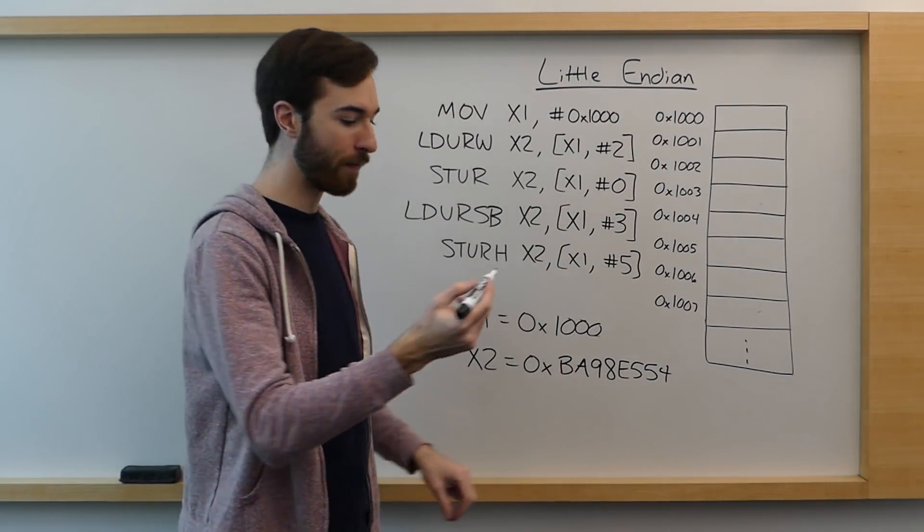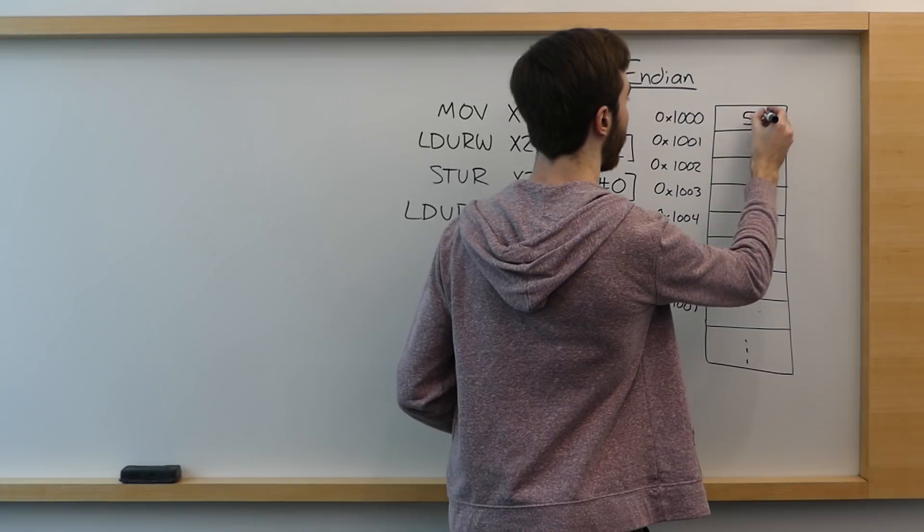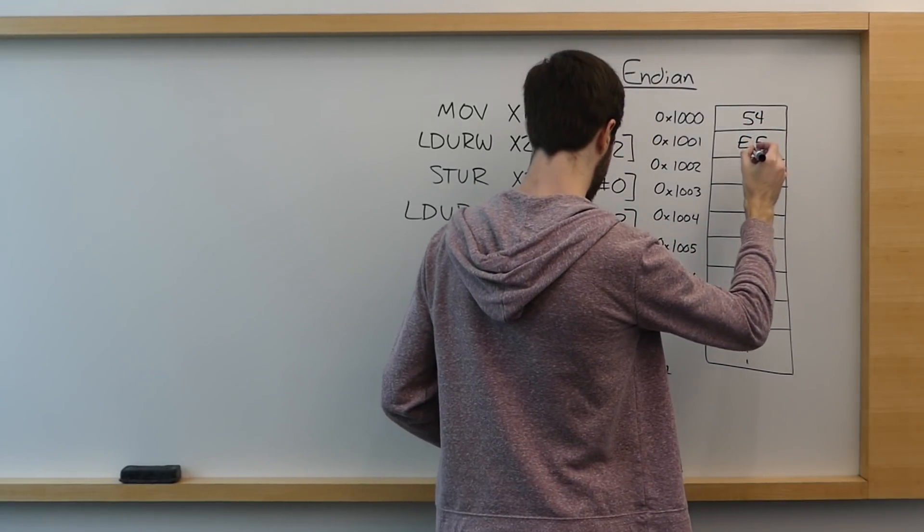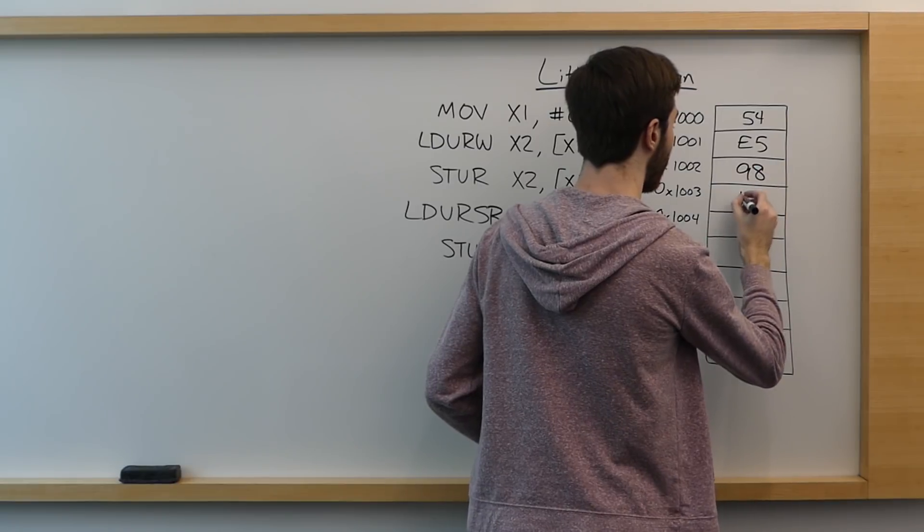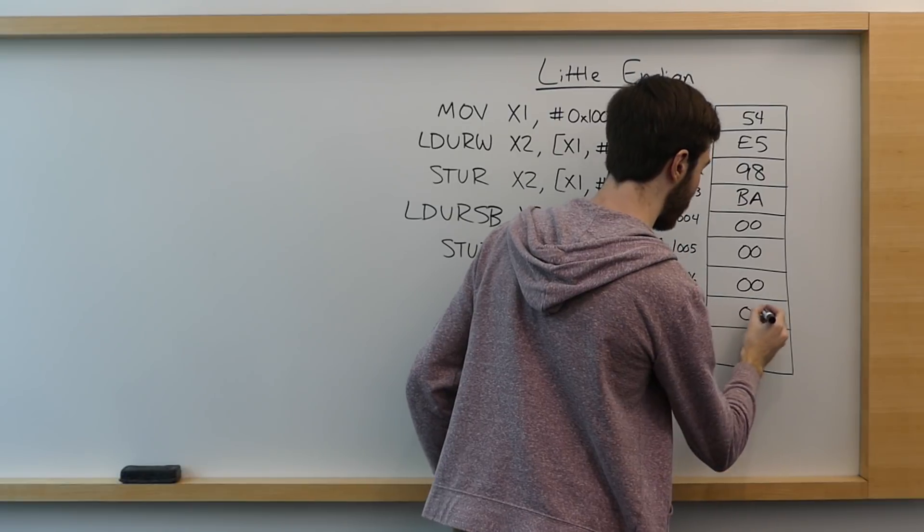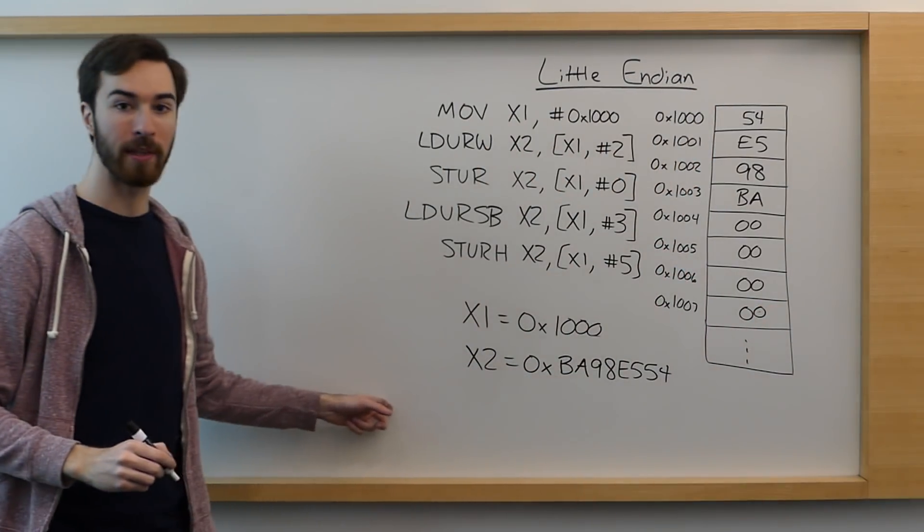Again, starting with the least significant bit, we have 54E598BA, and then the rest is zeros because the register is otherwise filled with zeros.